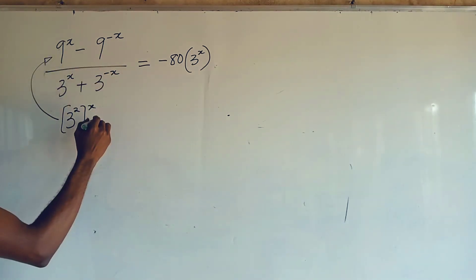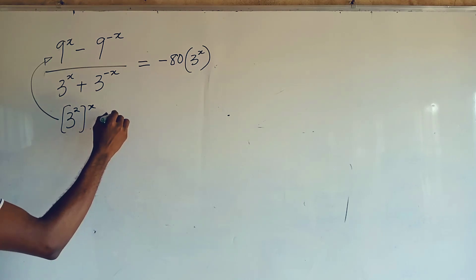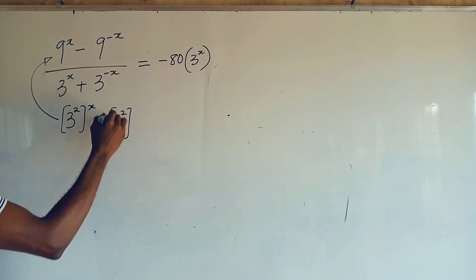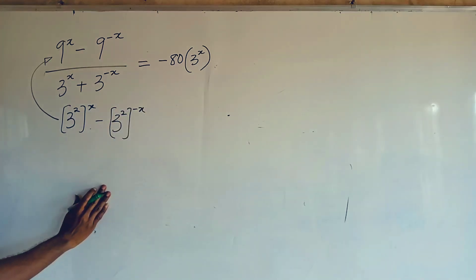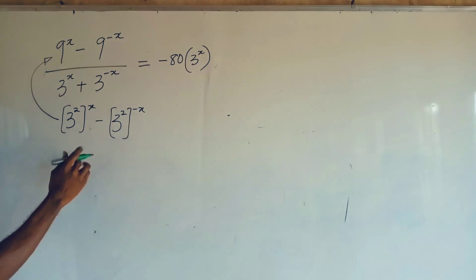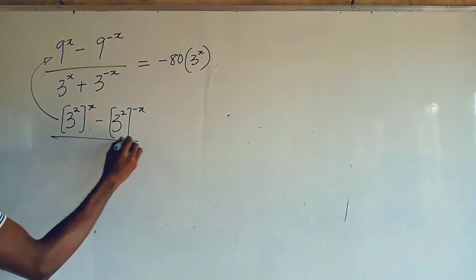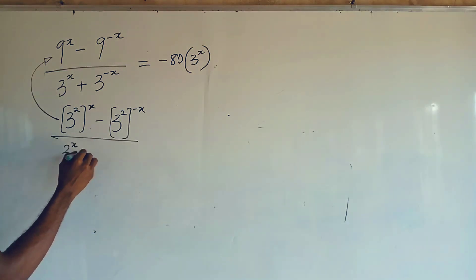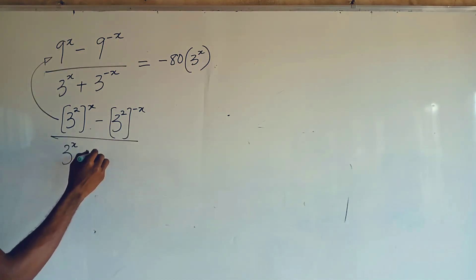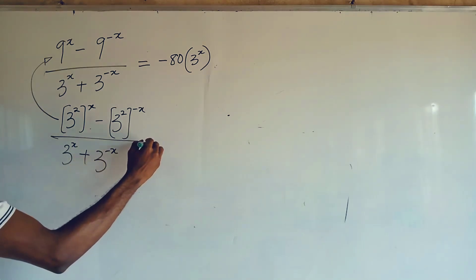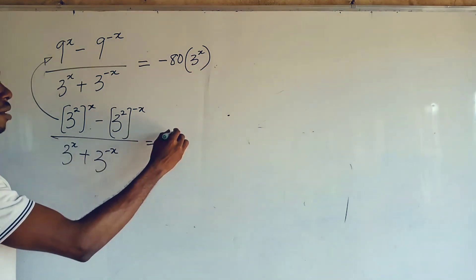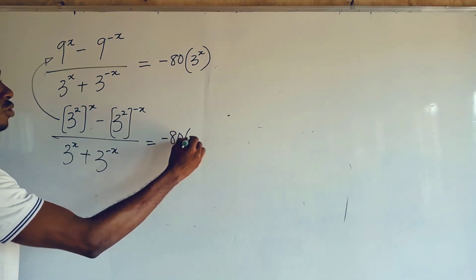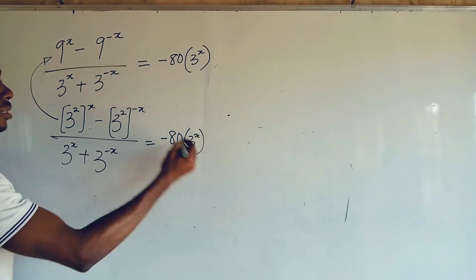So this will be saying minus 3 to the power of 2, all to the power of minus x. Then all upon 3 to the power of x, plus 3 to the power of minus x, is equal to minus 80 times 3 to the power of x.